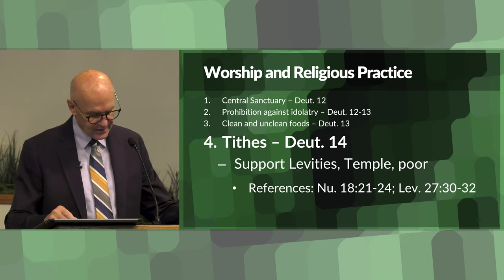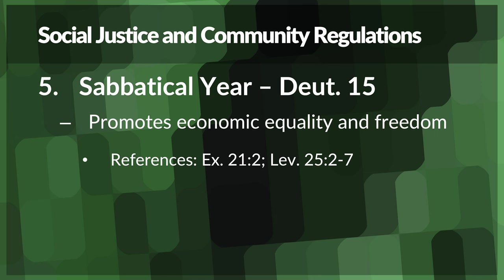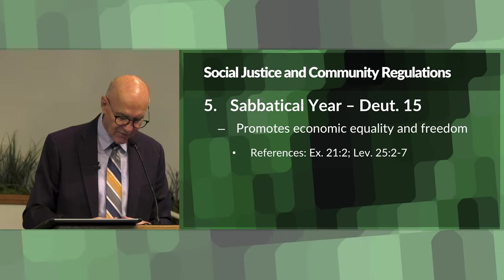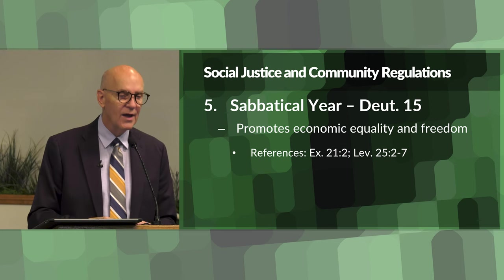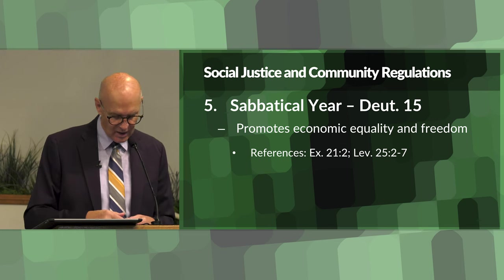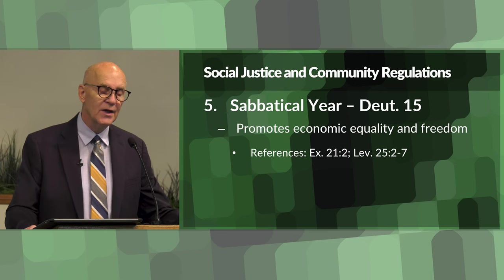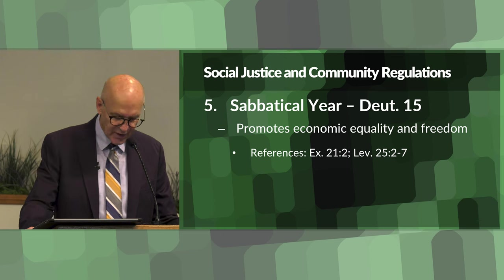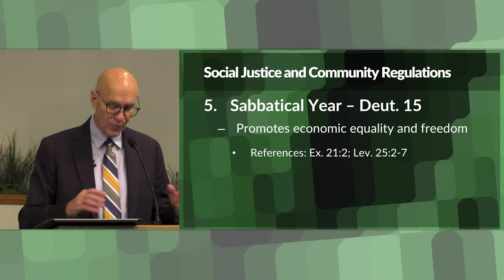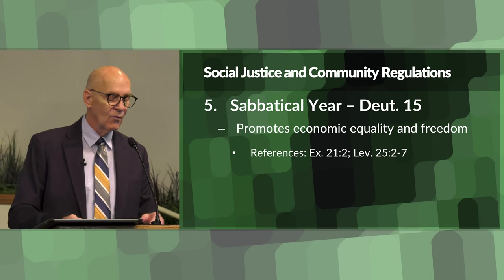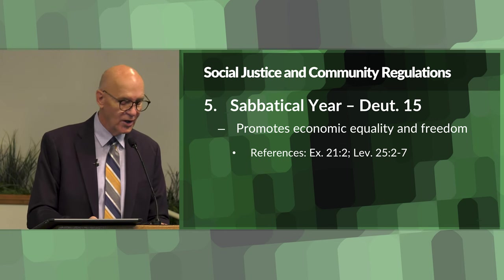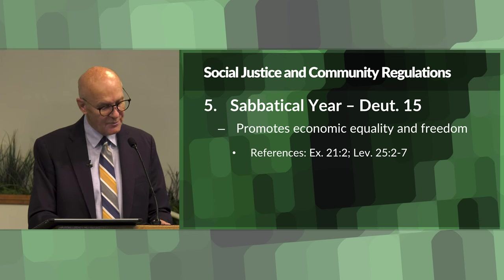The next group of items dealt with social justice and community regulations. One of these items was the sabbatical year in Deuteronomy chapter 15. Debts were forgiven and Hebrew slaves were freed every seven years. The purpose of this was to promote economic equality as well as freedom. The bottom line was that the rich couldn't get too rich and the poor would not be allowed to become too poor. You could be poor, but in Israel you would not be destitute.